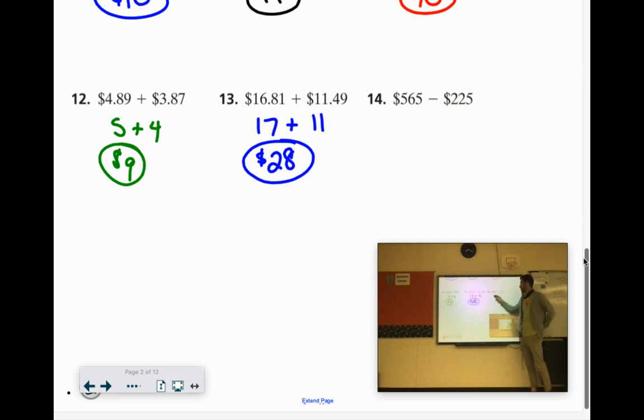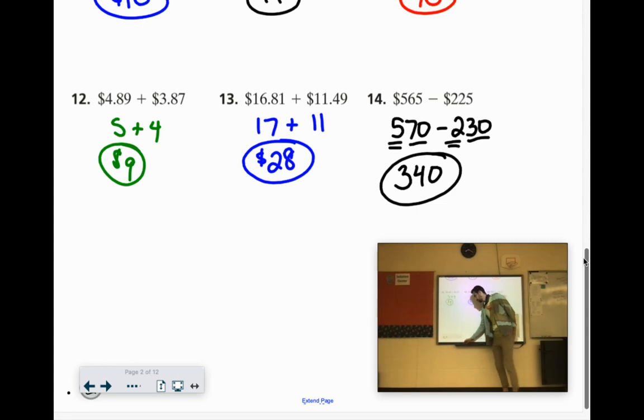565 minus 225. Let's call it 570. That would be easier. So we'll bump that up $5 to 570. We'll bump this up $5 to $230. So 500 minus 200 would be 300. 70 minus 30 is 40. So around 340.